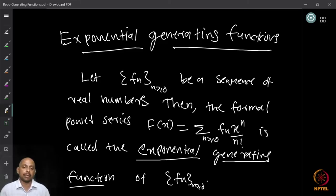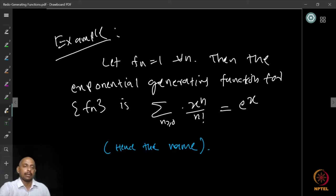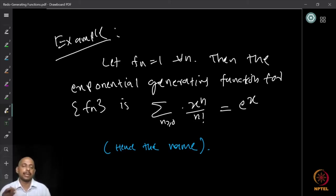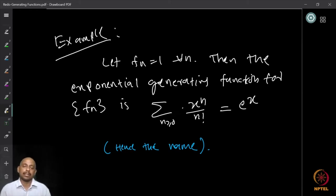As a first example, take the constant sequence fₙ = 1 for all n. Dividing by n! everywhere: ∑ fₙ · xⁿ/n! = ∑ xⁿ/n!, which from basic calculus is the series expansion for eˣ. The reason this is called the exponential generating function is precisely that the constant sequence yields eˣ as its generating function.